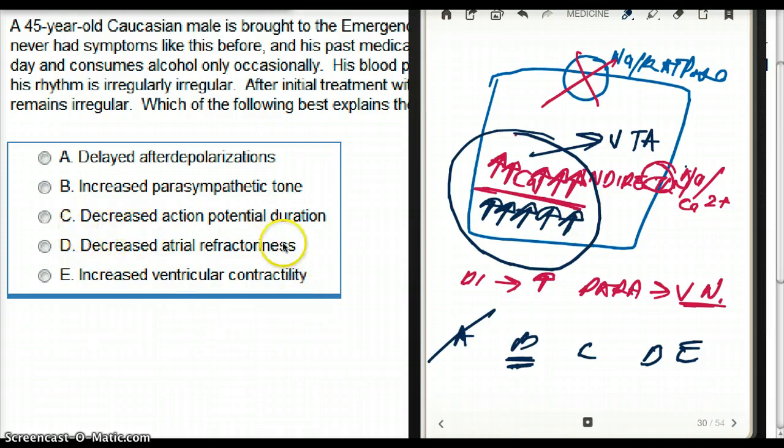Choice C said decreased action potential duration. Decreased action potential duration. It's not really the duration. It's the decreased action potential, I would say. It has nothing to do with the duration. It's not increasing the plateau phase or anything. So again, that is not the ideal choice.